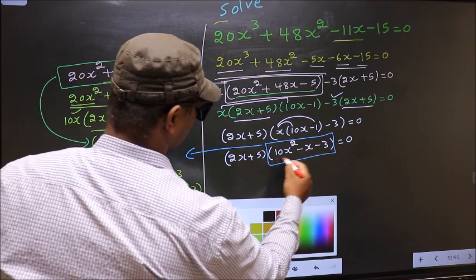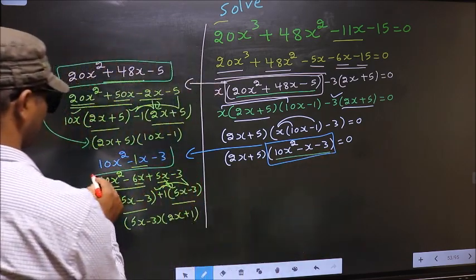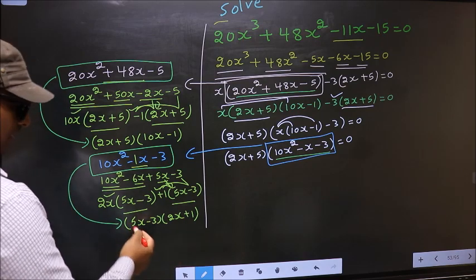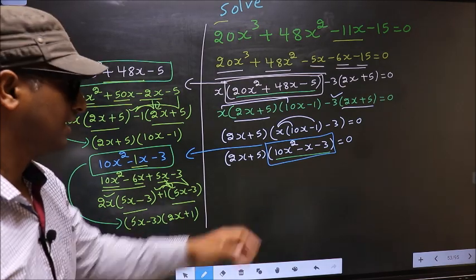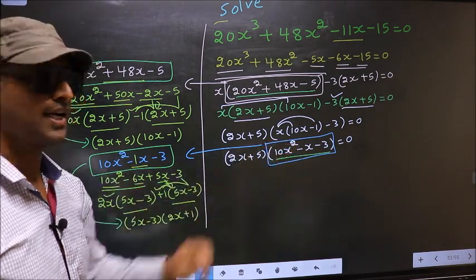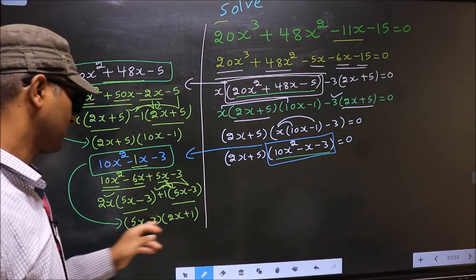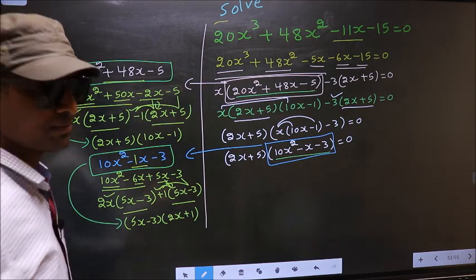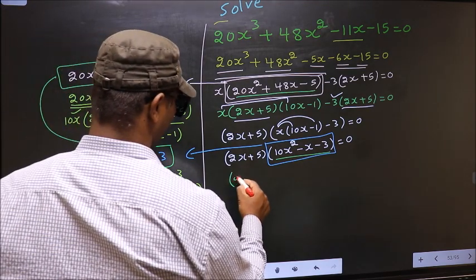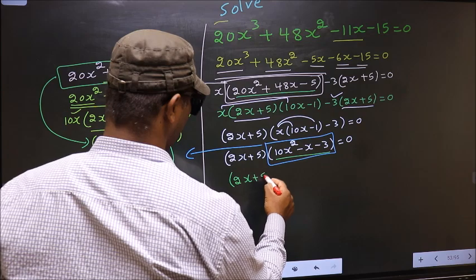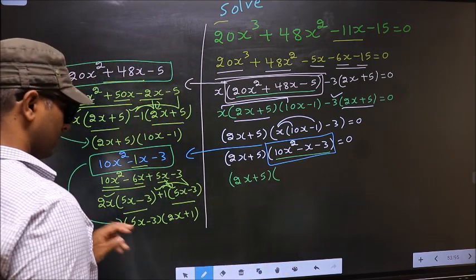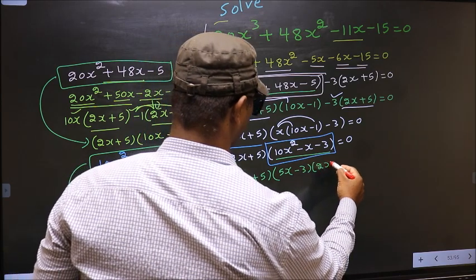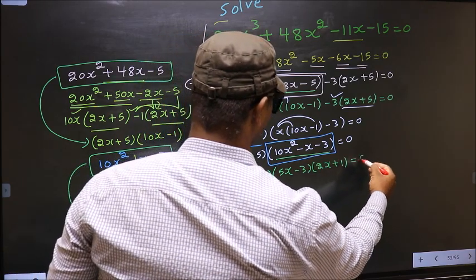In place of this quadratic, now I will write (5x - 3)(2x + 1). So the equation changes to (2x + 5)(5x - 3)(2x + 1) = 0.